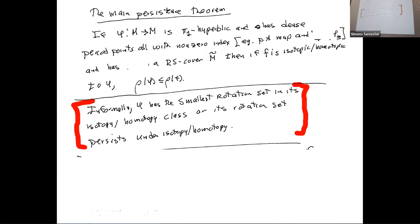If you're pi-1 hyperbolic and have dense periodic orbits — meaning you can run Handel's theorem — then for any covering space, the rotation set can only get bigger under homotopy. The smallest rotation set is the pseudo-Anosov or phi-3 minimal model. Anything homotopic to it has a rotation set at least as large.